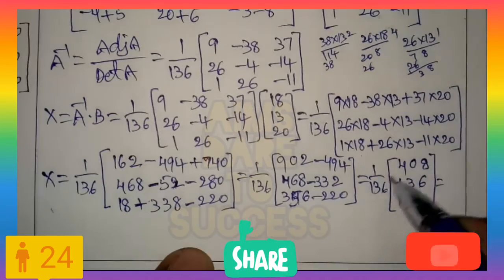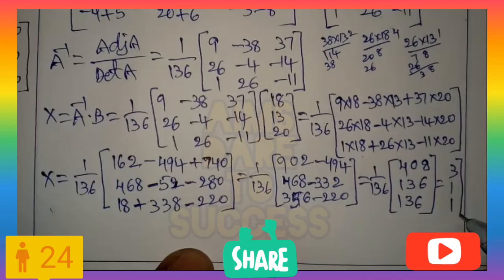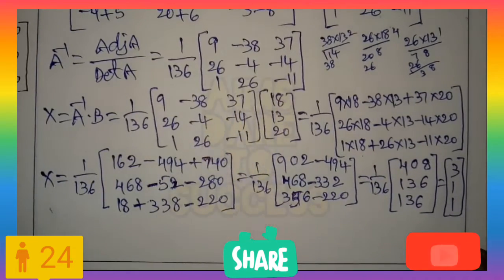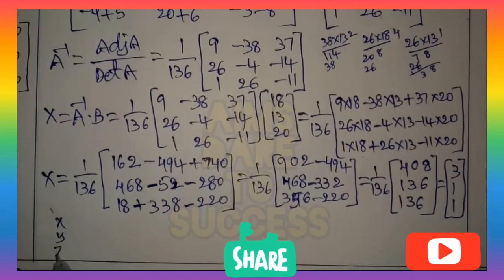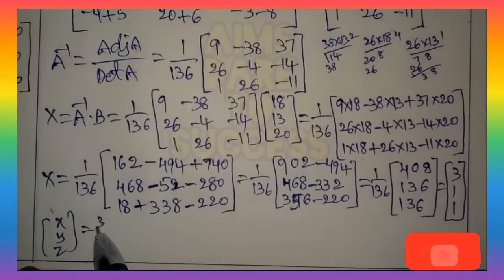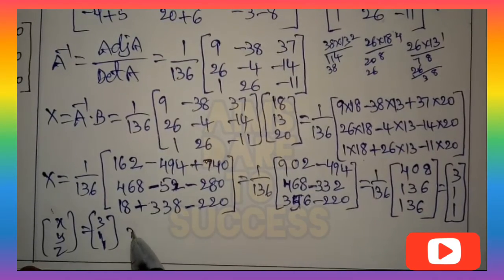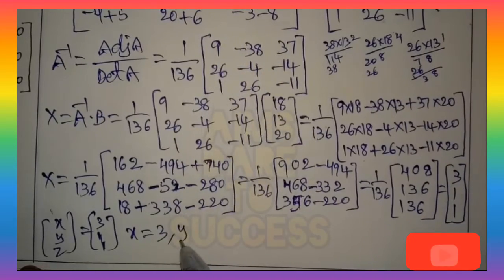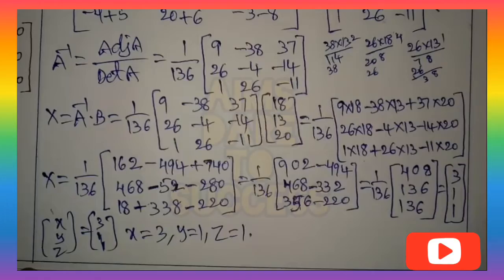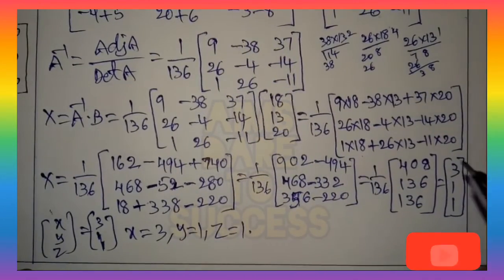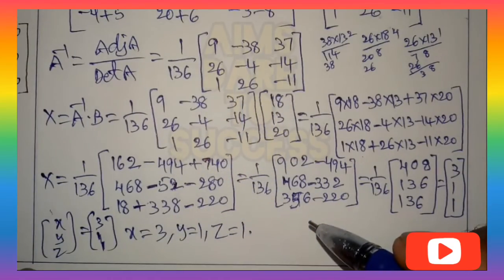That matrix equals [3, 1, 1]. So capital X — meaning the column matrix [x, y, z] — equals [3, 1, 1]. Equating individually: x = 3, y = 1, z = 1. My dear students, if you are satisfied with my explanation, please subscribe to our channel, support us, share with your friends, and like and comment on this video. Joy of sharing is caring and helping. Thank you.